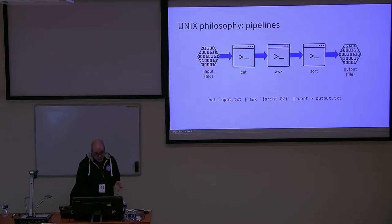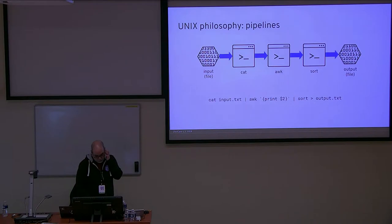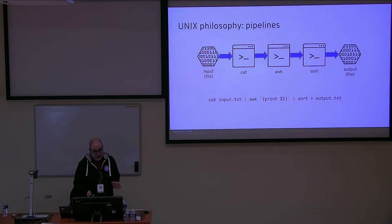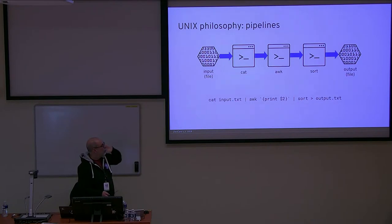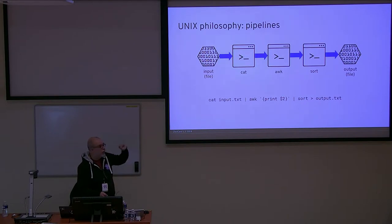A simple example of the Unix philosophy is pipelines. Pipelines allow us to chain the inputs and outputs of different processes. In this case, we're reading an input file using a process called cat — which I'm sure everyone knows — to read an input file. Then we're sending the output of that process to a text processing program, then sorting it using another program, and finally writing it to disk.